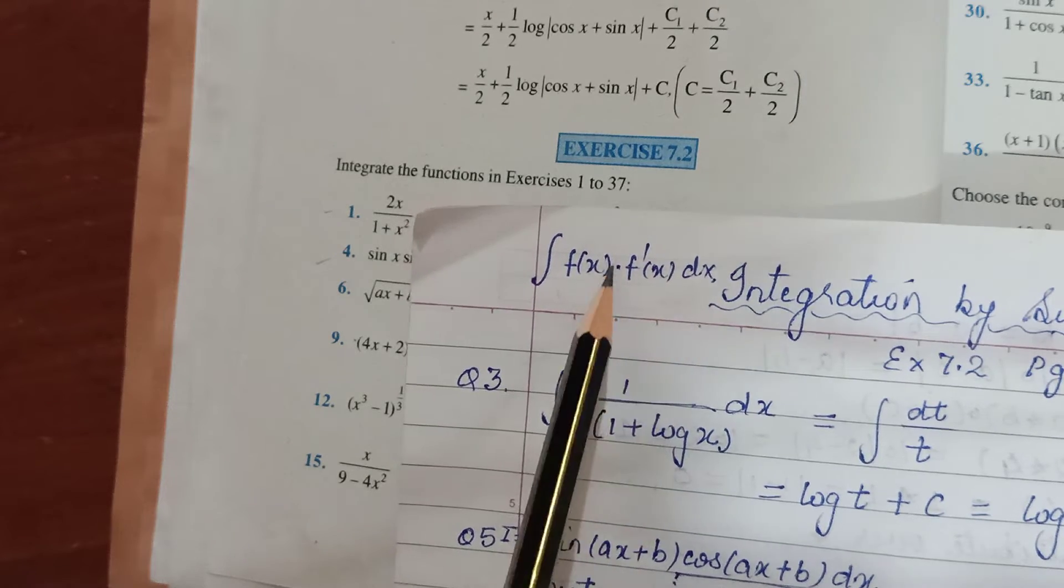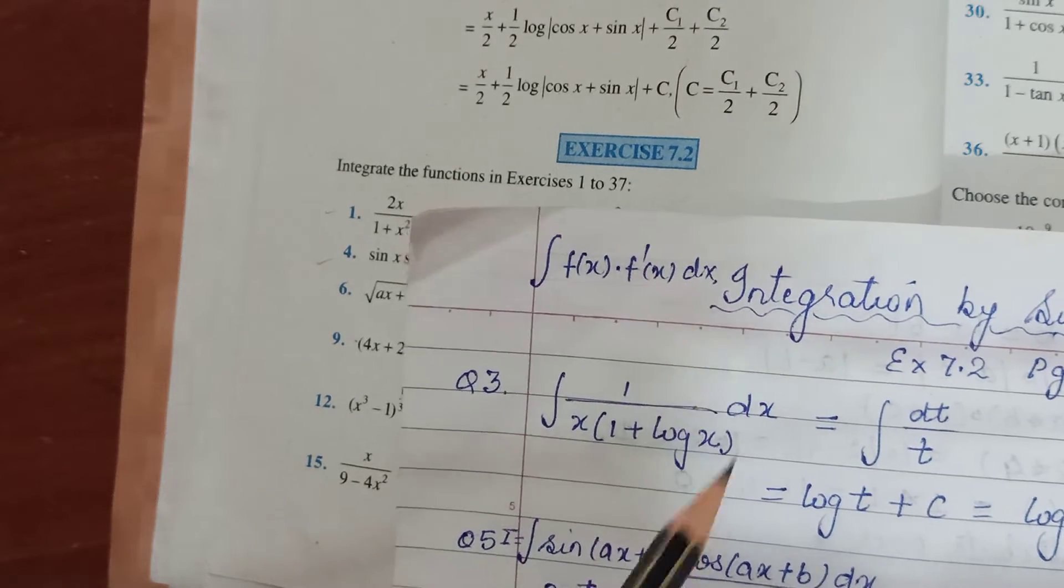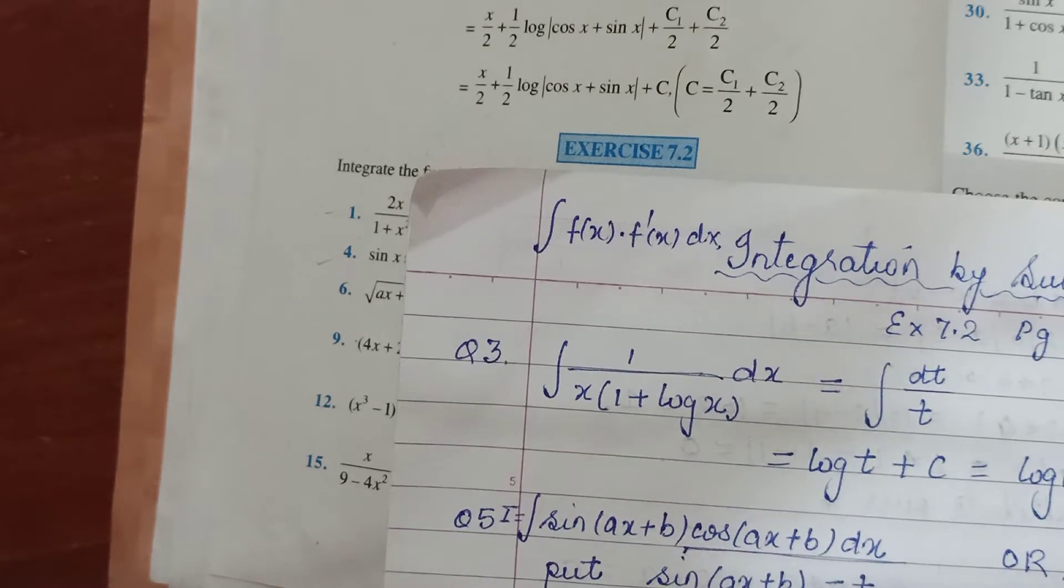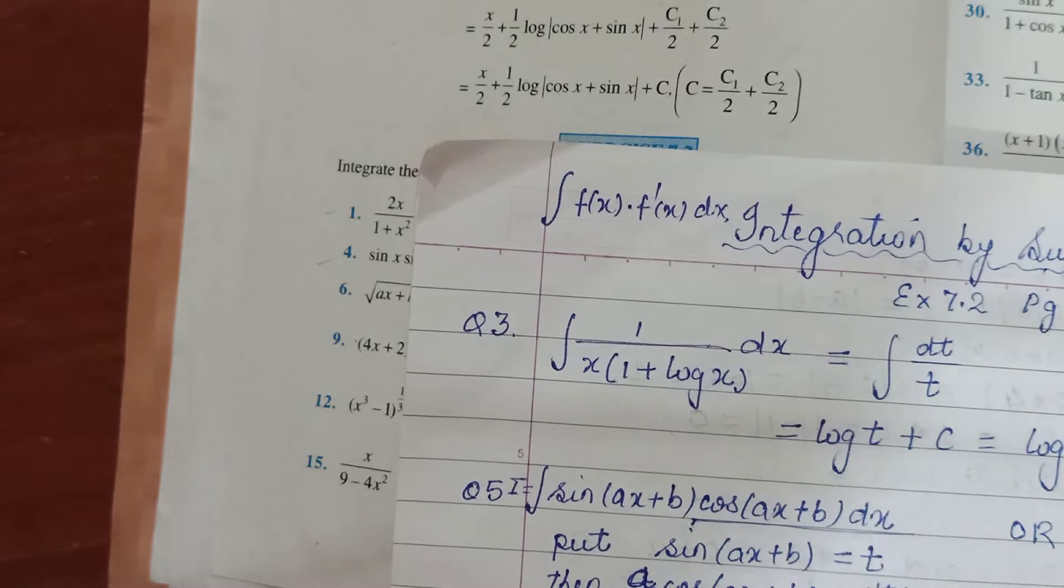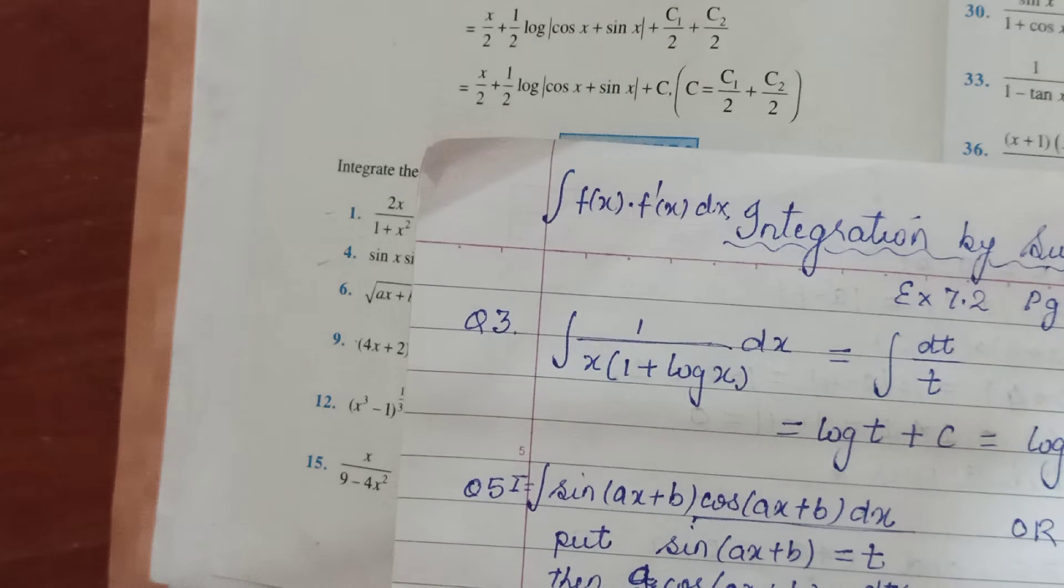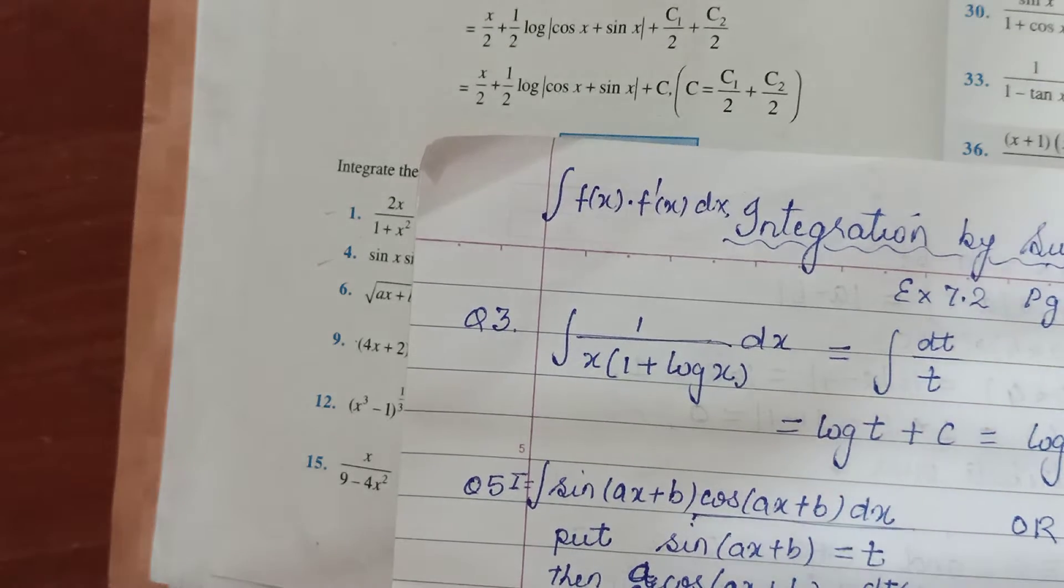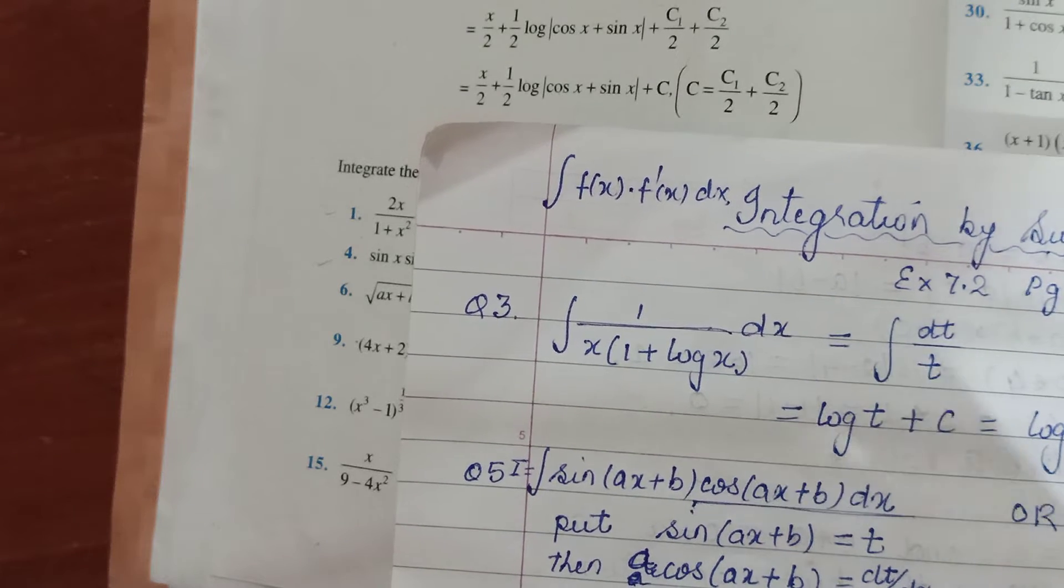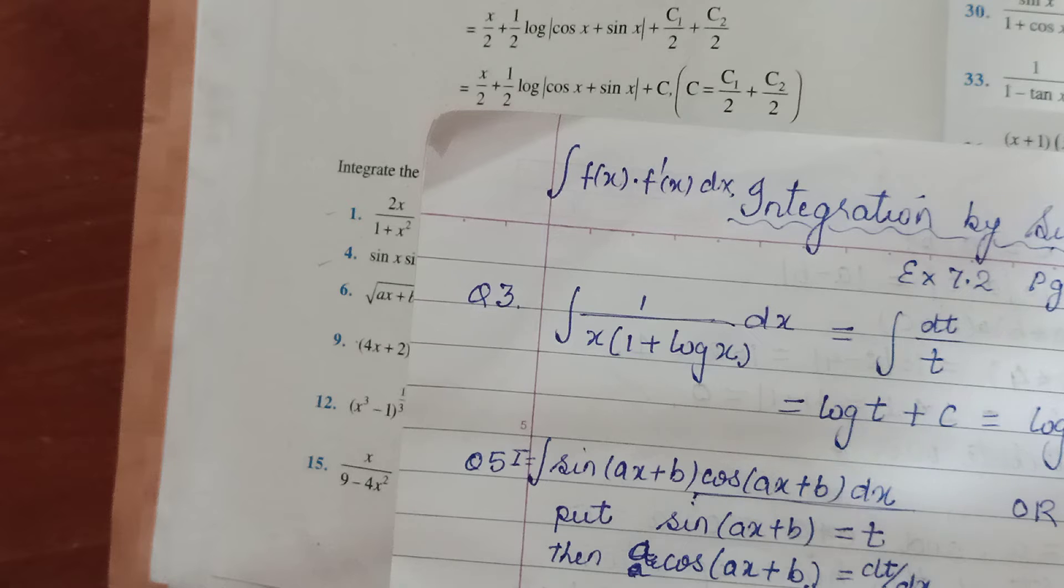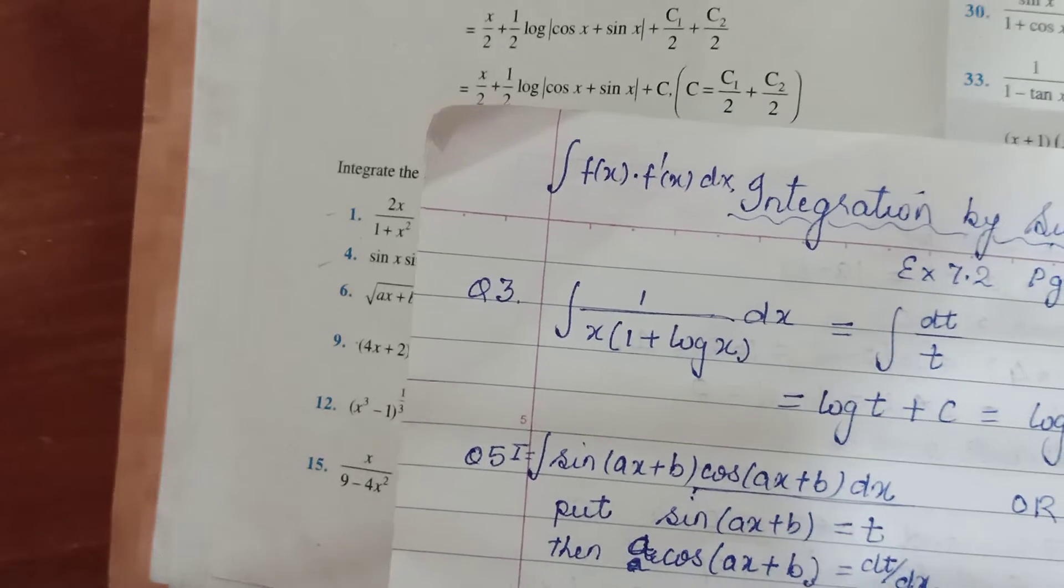But substitution is only possible when you also have the derivative some way or the other present. Because there's nothing as chain rule jaisa derivative mein. If we are doing any kind of substitution, that substitution should lead you to minimizing your function, and that minimization comes only when the derivative is present. When I'll do the examples you'll follow what I'm trying to say.